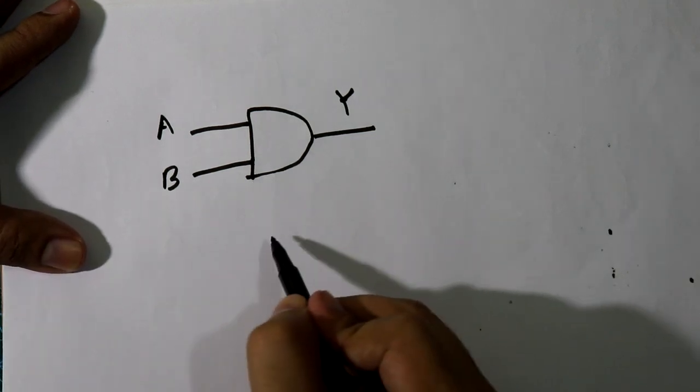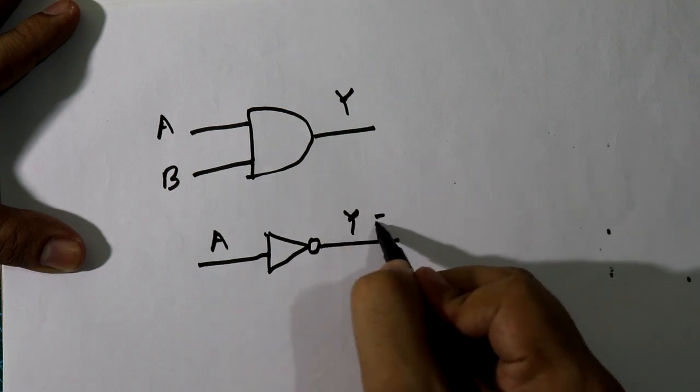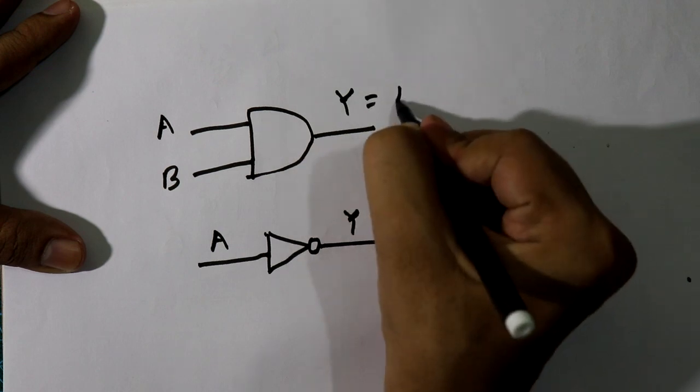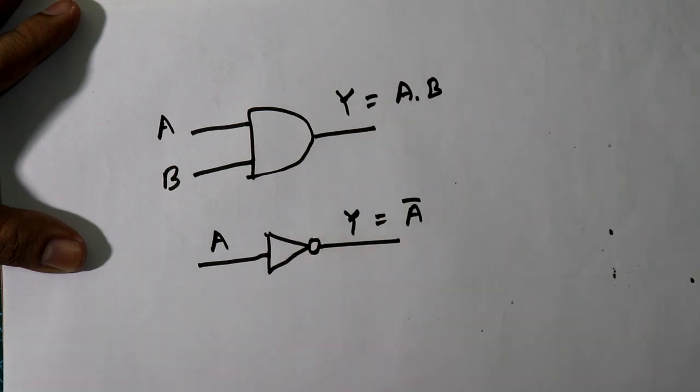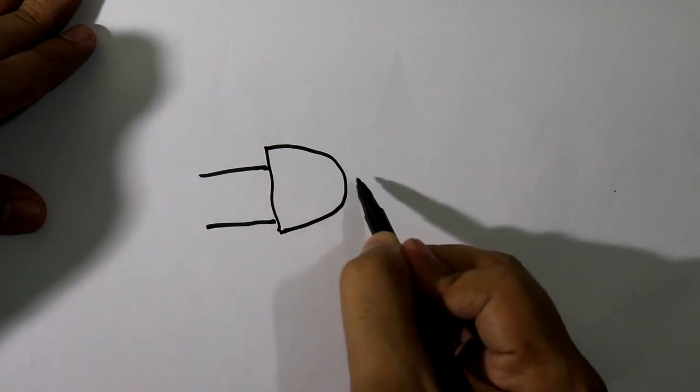The symbol of NOT gate is like this. Here it is A and Y, and Y equals A complement. Here Y equals A dot B. Here it is AND gate, right? And if we add one NOT gate, then it becomes NAND gate.